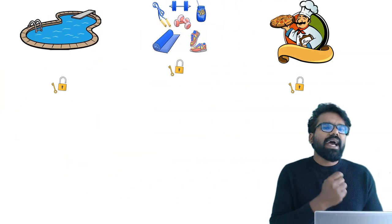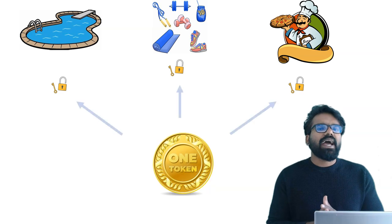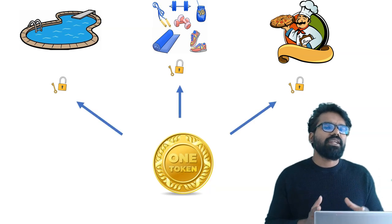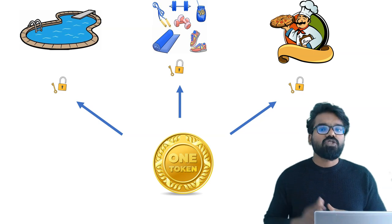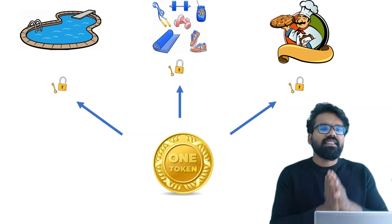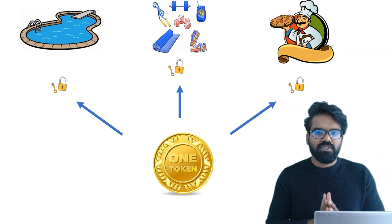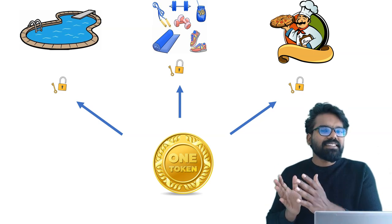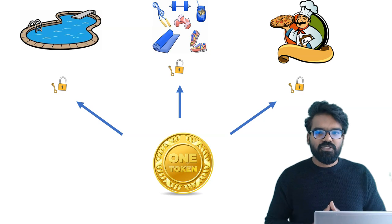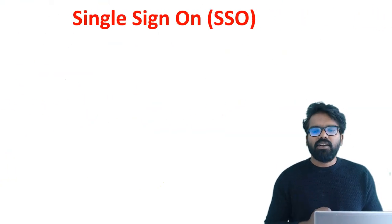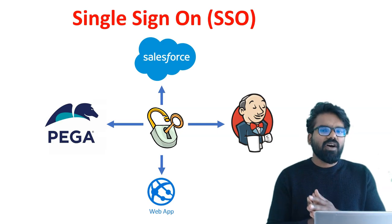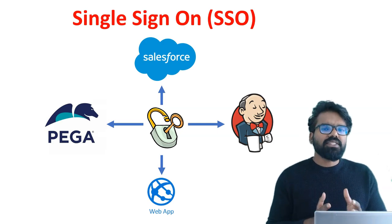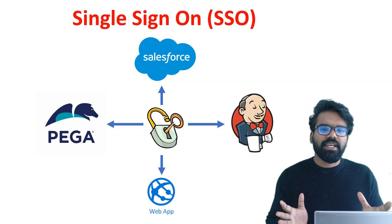You can consider it an access token. With the access token, you can access the resources — you can get into the restaurants and swimming pool and enjoy your stay at the hotel. So what you see here is you get one token with which you can access all those resources. Now I'm going to compare this example with IT terminologies.